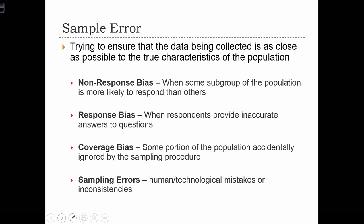Coverage bias is when some portion of the population is accidentally ignored by the sampling procedure. For example, if we conduct our survey by calling people's home phones, we're inadvertently not collecting data about people who don't have home phones — this is becoming a big issue as people move away from home phones and only have cell phones. Sampling errors also exist: these are human or technological mistakes or inconsistencies made when collecting data or when transcribing or transforming data from paper records into a computer format. We've already discussed sources of sampling error in previous sections about data accuracy and precision.